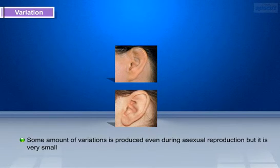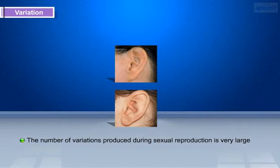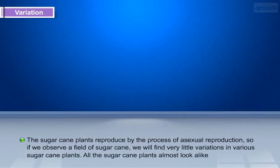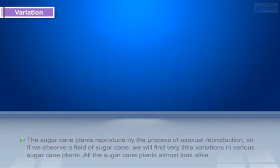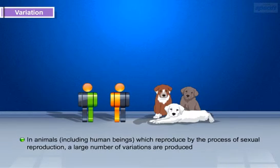Some amount of variation is produced even during asexual reproduction, but it is very small. The number of variations produced during sexual reproduction is very large. For example, sugar cane plants reproduce by the process of asexual reproduction, so if we observe a field of sugar cane we will find very little variation among the plants — all the sugar cane plants almost look alike. But in animals including human beings, which reproduce by sexual reproduction, a large number of variations are produced.